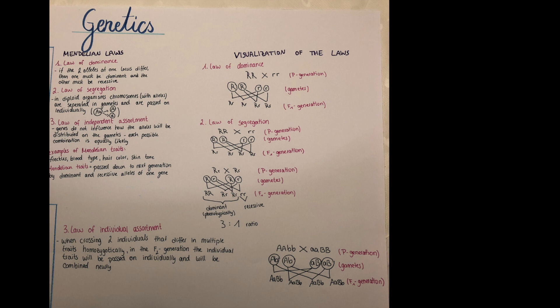In the second one, the law of segregation, I again made a cross scheme. And here, again, we cross a homozygotic dominant with a homozygotic recessive individual. I marked it again with the P generation and that I'm crossing them with a cross. Then I wrote down the gametes where I just write every letter individually. I usually make a circle around and mark how I cross them, so that I'm sure I don't miss any of them.